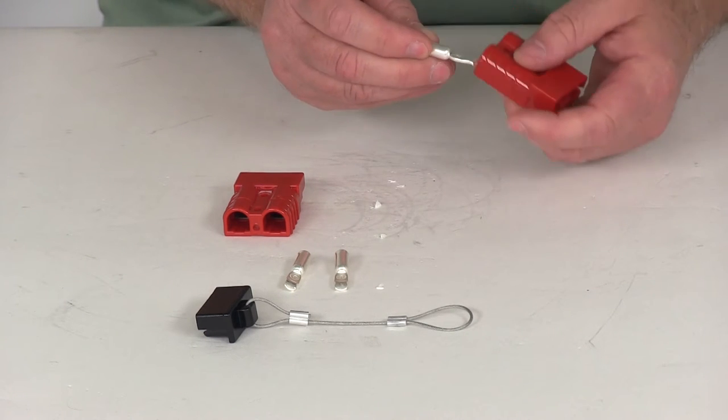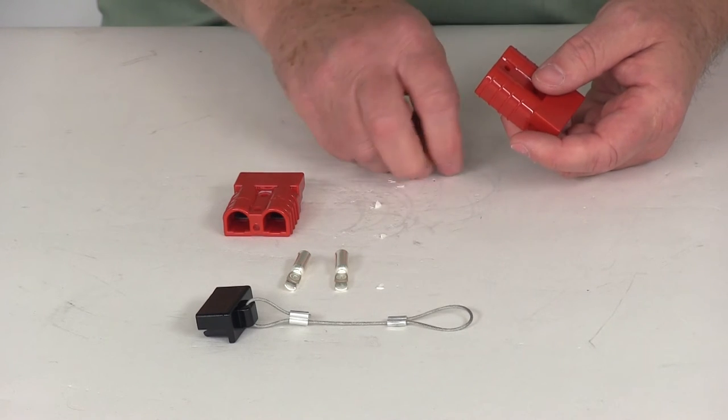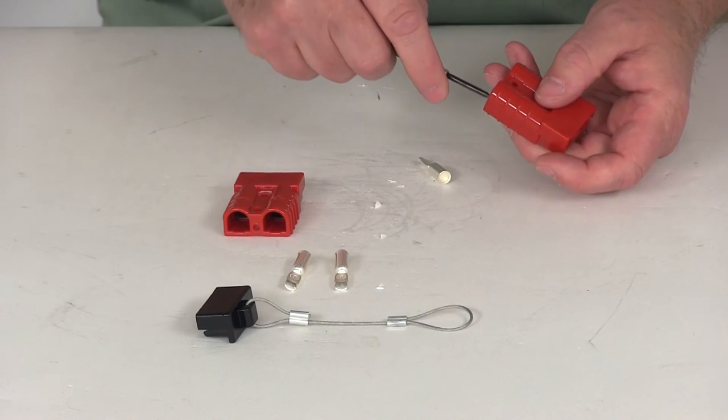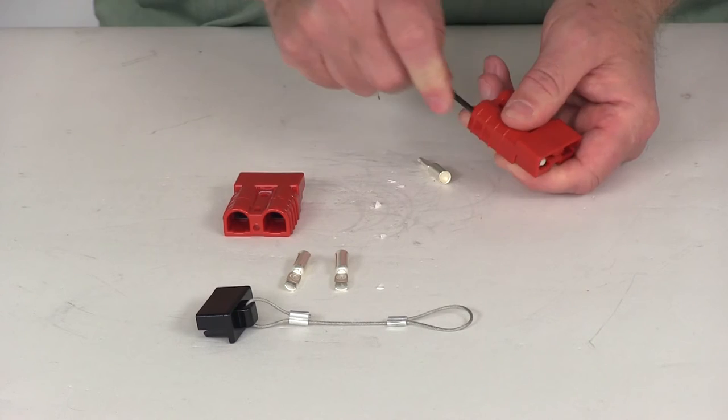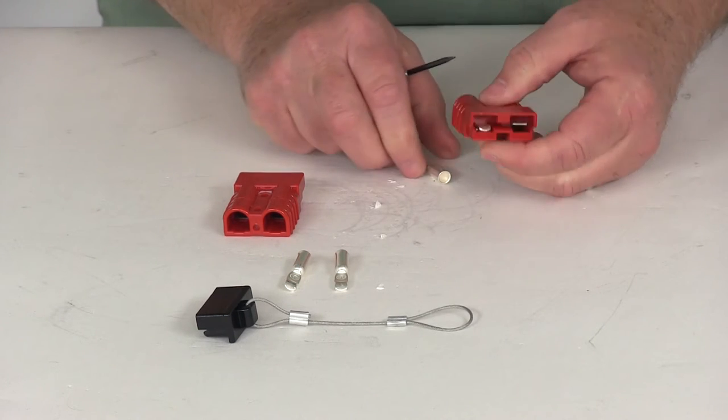Now if you notice the terminal has a little hook. You want that to point down and then you'll just put it in there. When you have the wire connected, you'll be able to just push it all the way in. Just like that, it will clip and snap into place.